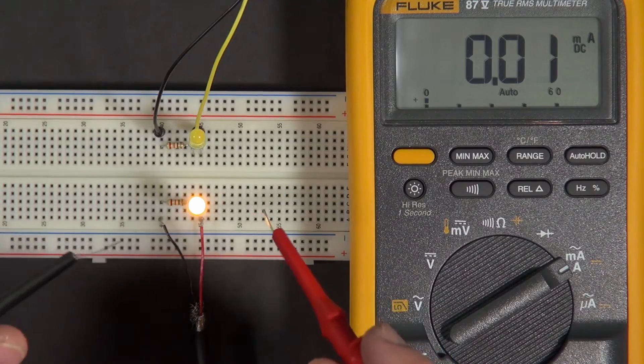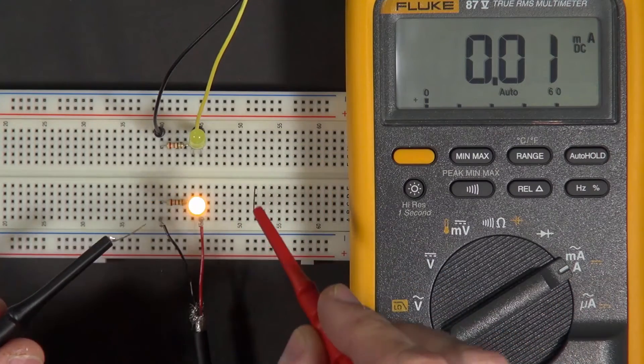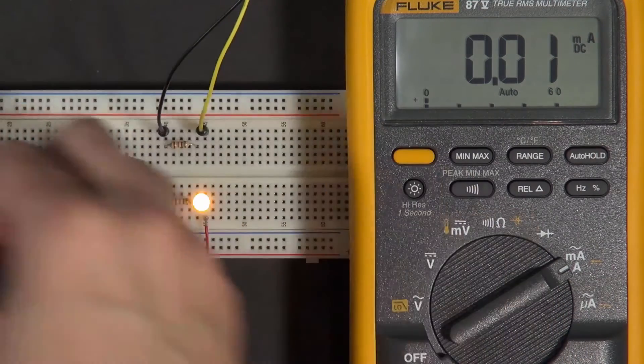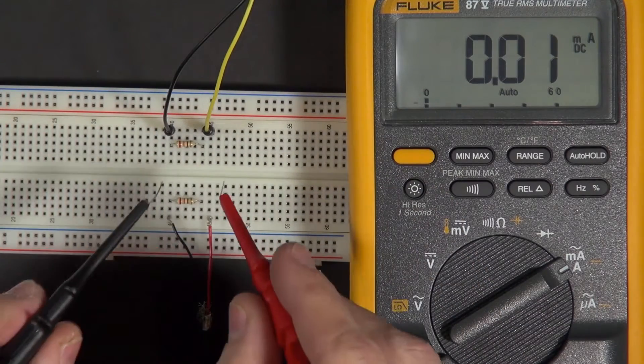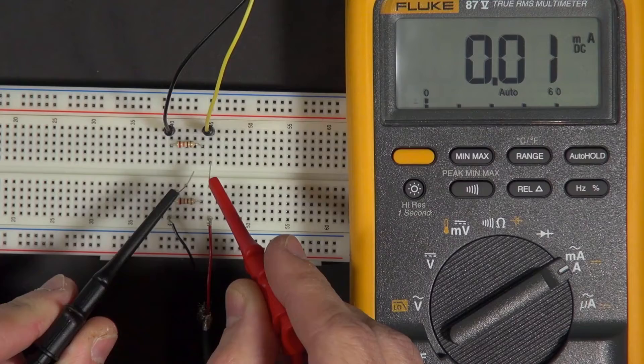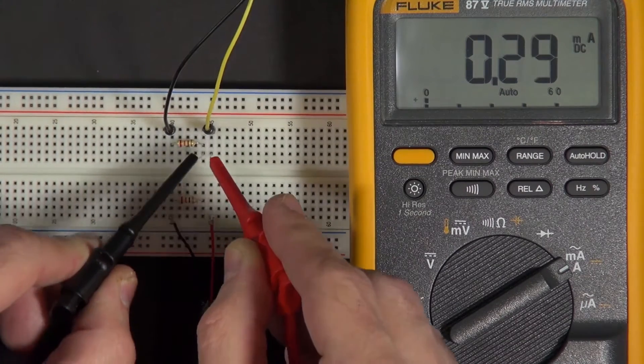To measure amps we have to put the ammeter in series with the circuit. What I'll do is take the LED out of the circuit, out of both of these circuits, and I'll put the ammeter in place of where the LED was just to see how many amps were flowing through that part of the circuit.